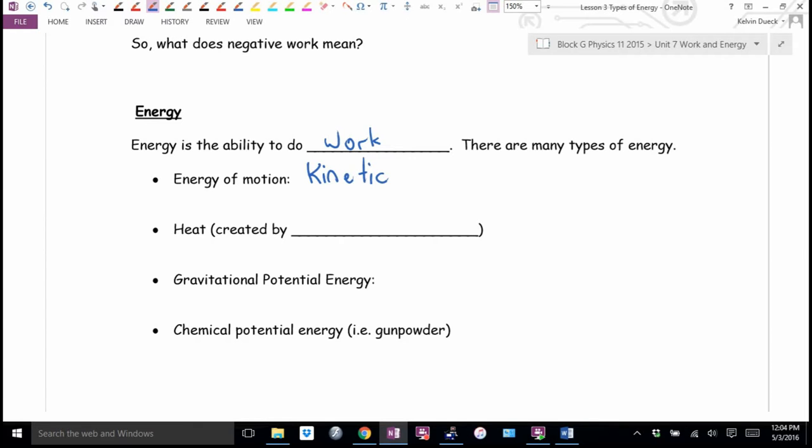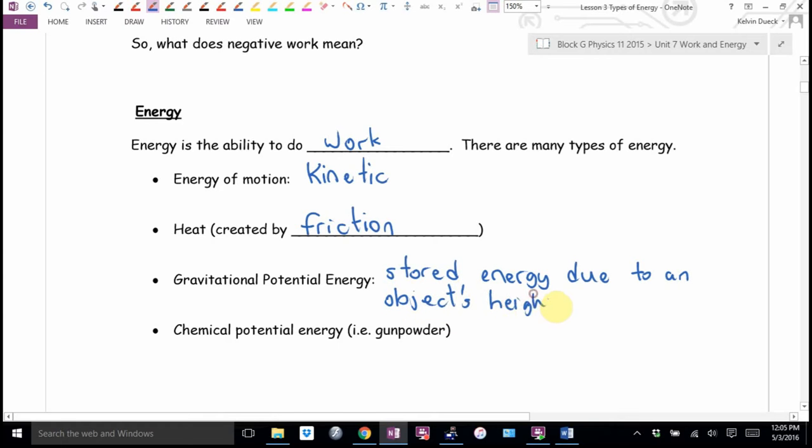Heat, another type of energy, a dominant form of energy. Heat is created by, which force is the force that creates the most heat? Friction. Gravitational potential energy, that's two words. Gravitational, think gravity. Potential, think stored.